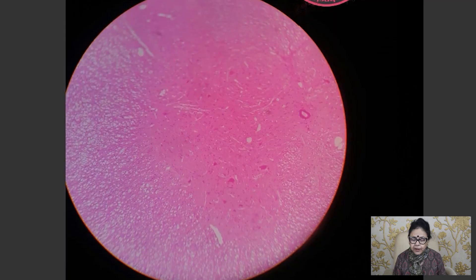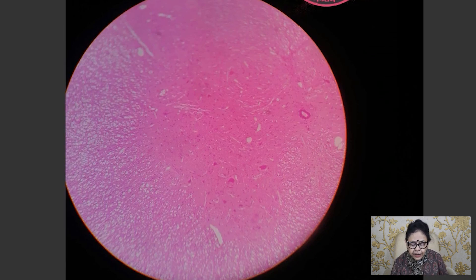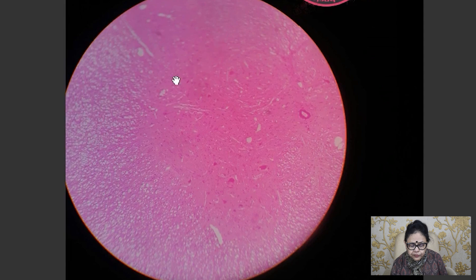Today I shall discuss how you will identify the spinal cord under the microscope. Now, you know the spinal cord section, it is an H-shaped grey matter is situated within and you see this is the part of the H-shaped grey matter because the portion is very wide and this is the periphery.